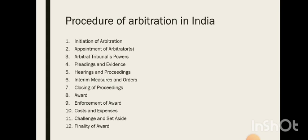Coming to the procedure of arbitration in India: First, initiation — arbitration is initiated by a party sending a notice to the other party invoking arbitration, dealt with in Section 21 on commencement of arbitration proceedings. Second, appointment of arbitrators — parties may agree on the number and appointment under Section 11, which also provides the default procedure if parties fail to agree, resulting in a sole arbitrator. Third, arbitral tribunal's powers — the tribunal has authority to conduct proceedings, administer oaths, and rule on its own jurisdiction under Section 16.